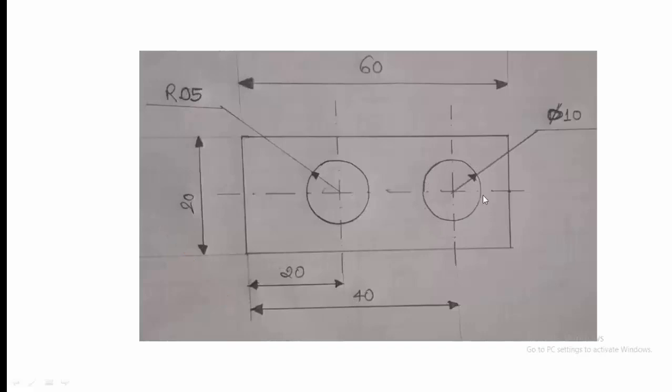If I want to make a circle, I will make a leader line. Then I will make a straight line. If I want to make a circle of diameter, then I will make phi 10. Phi 10 means this dimension is 10, phi means diameter. If you want to show radius, then radius is 5 mm.